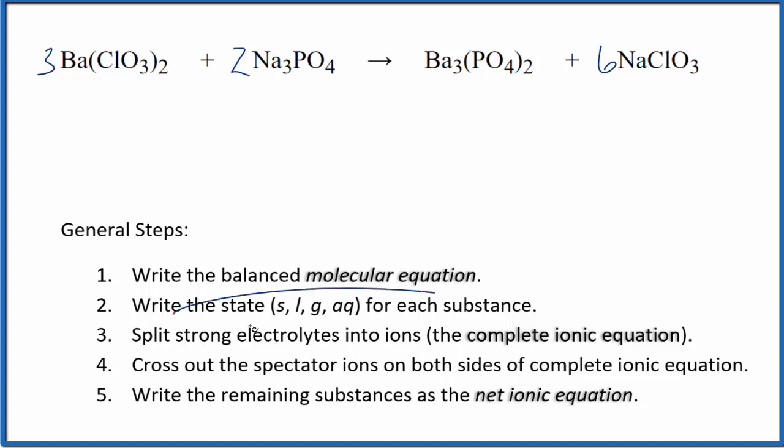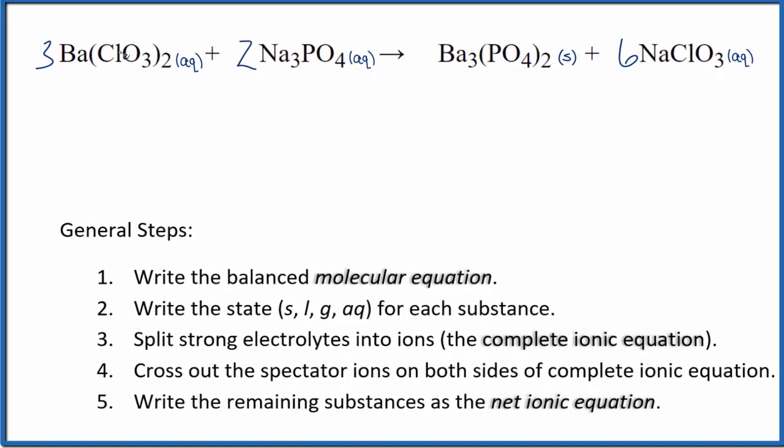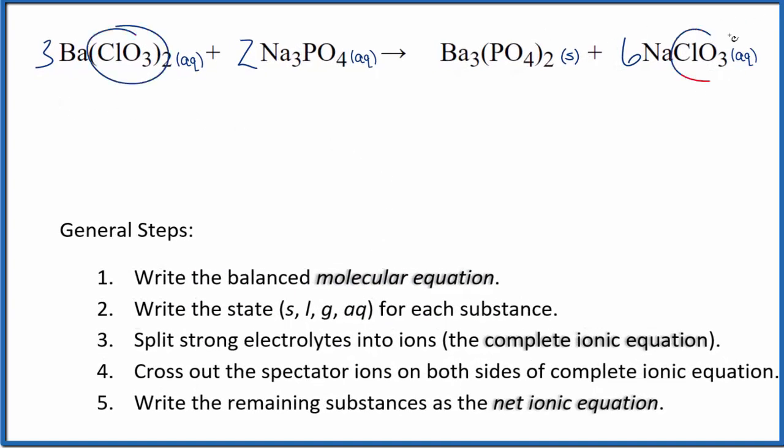Now we need to write the state for each substance, and that looks like this. Compounds with the chlorate ion here, they're very soluble. Compounds with sodium, also very soluble. But phosphates in general are insoluble,